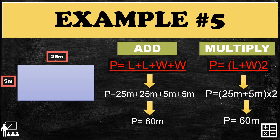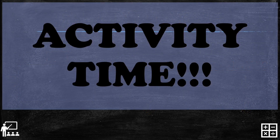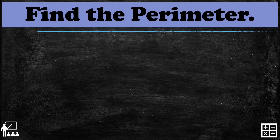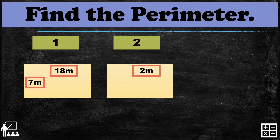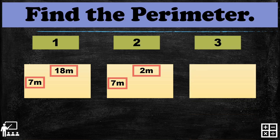It is now your activity time! Find the perimeter of each rectangle. Rectangle one has 18 meters in length and 7 meters in width. Rectangle two has 2 meters in length and 7 meters in width. Rectangle three has a length of 6 meters and 4 meters in width. Please comment your answers in the comment box and I will check them. I hope you learned how to get the perimeter of a rectangle!